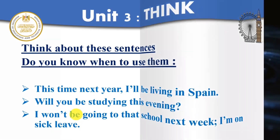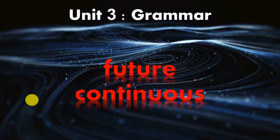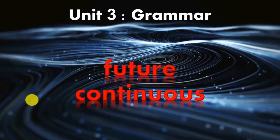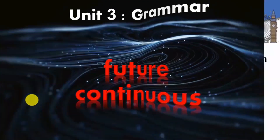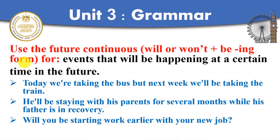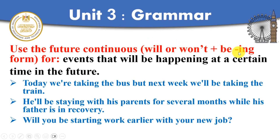It's the future continuous. How to form it? Will or won't, plus be, plus -ing. So: I'll be doing, I'll be eating, I won't be eating, I'll be working, I won't be working, and so on. It's will or won't plus be plus the -ing form.